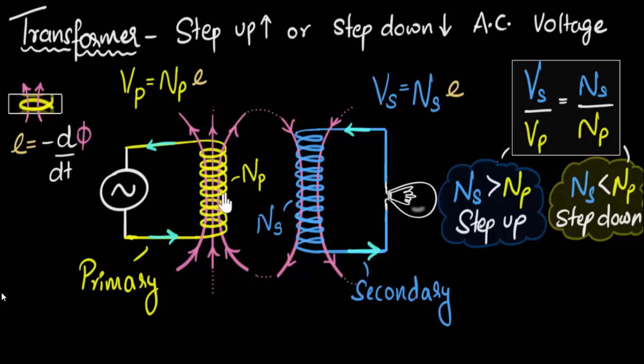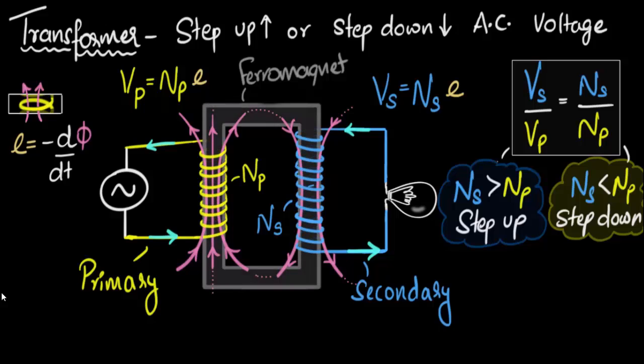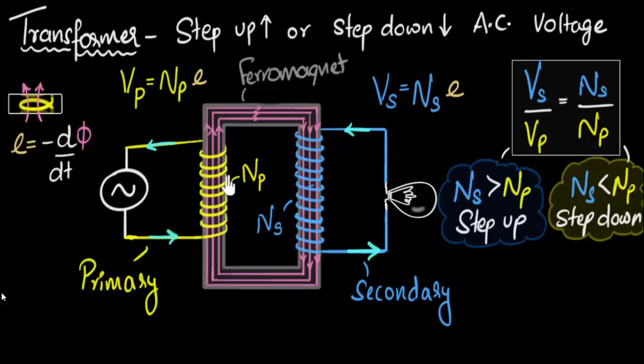Okay, lastly, how do we make sure the flux here and here remains exactly the same, otherwise the equation won't work? Well, a way to do that is by introducing a ferromagnetic core. A ferromagnet has the ability to sort of suck in magnetic field lines. And as a result, almost all the field lines from the primary passes through the secondary, making sure the flux through each coil is exactly the same.